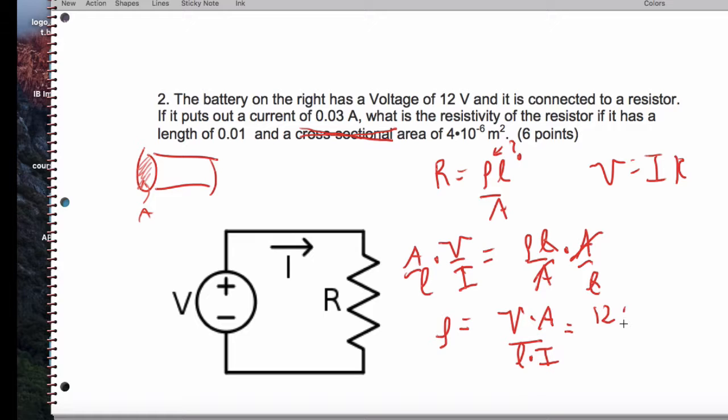And when I plug in my numbers, I got 12 volts times an area of 4 times 10 to the negative 6th. Sorry, 4 times 10 to the negative 6th.